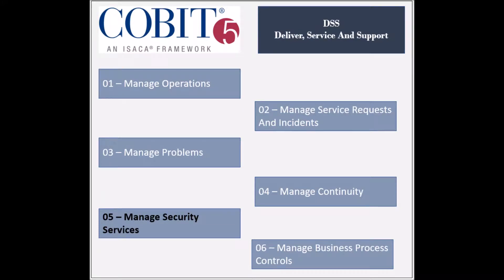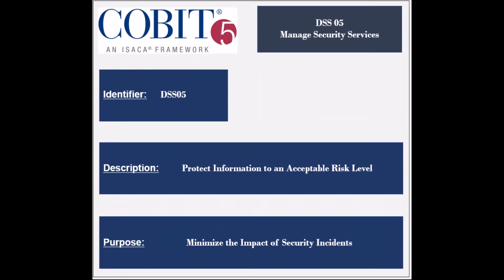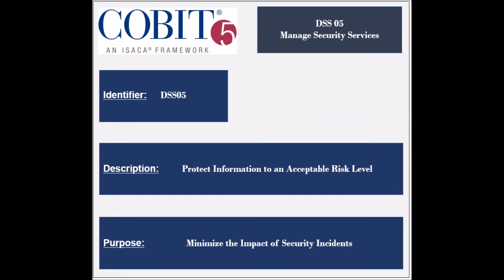The fifth process of the Deliver Service and Support Domain is called Manage Security Services. The identifier of the process is DSS-5. The process ensures that information is protected to the level of security risk acceptable to the organization. Information security roles should be established, and security monitoring should be performed. The purpose of this process is to minimize the impact of information security vulnerabilities and incidents.